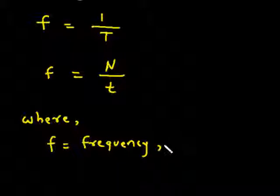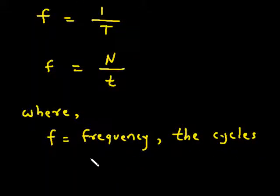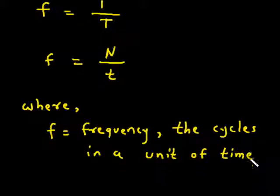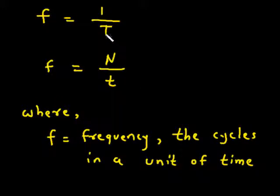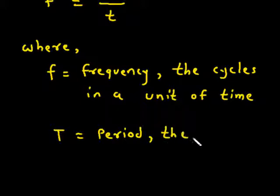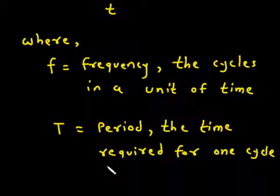Where F is equal to frequency — the cycles in the unit of time. T is equal to period — the time required for 1 cycle.